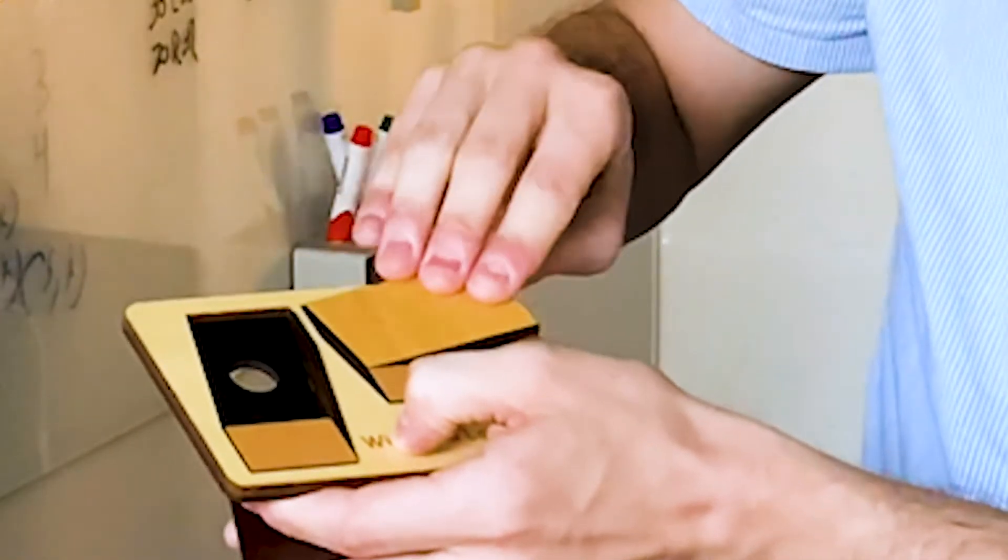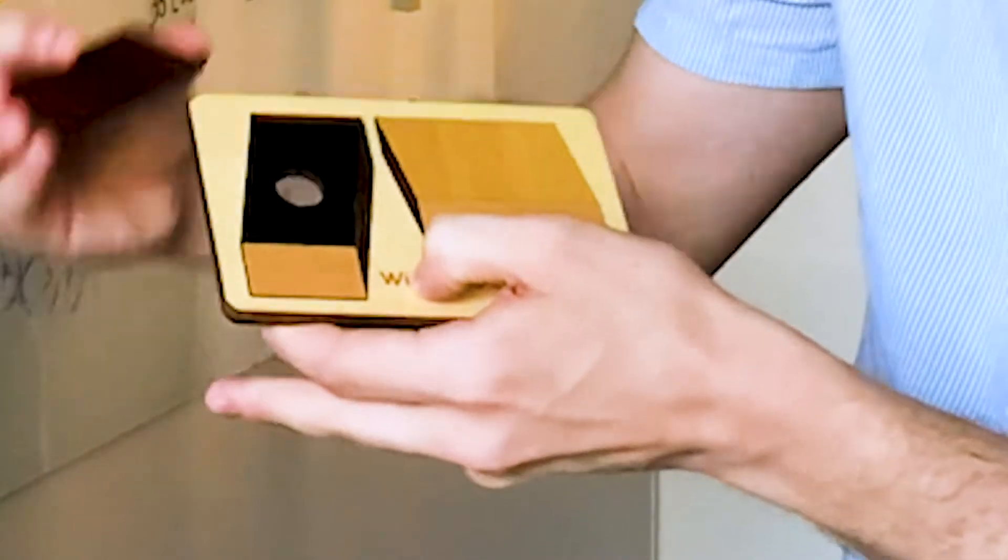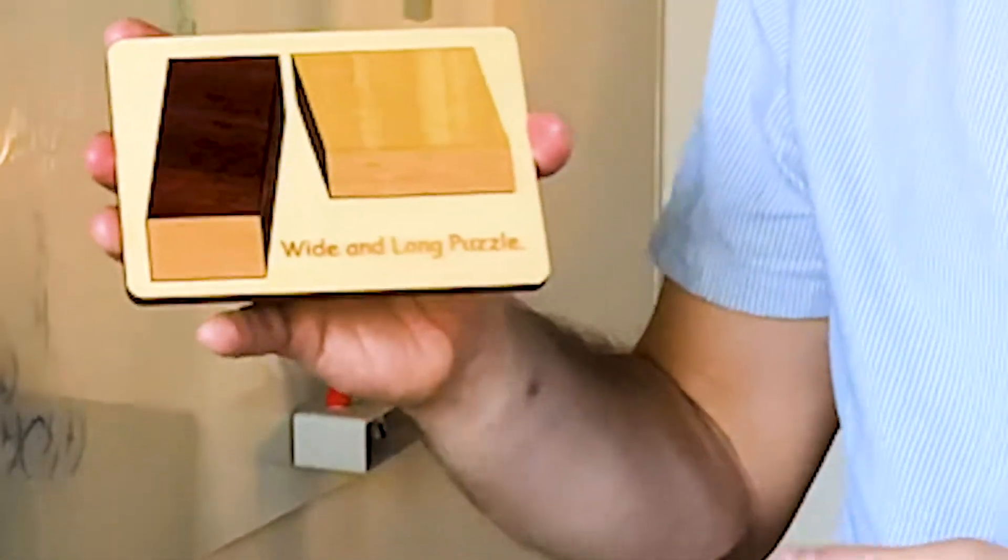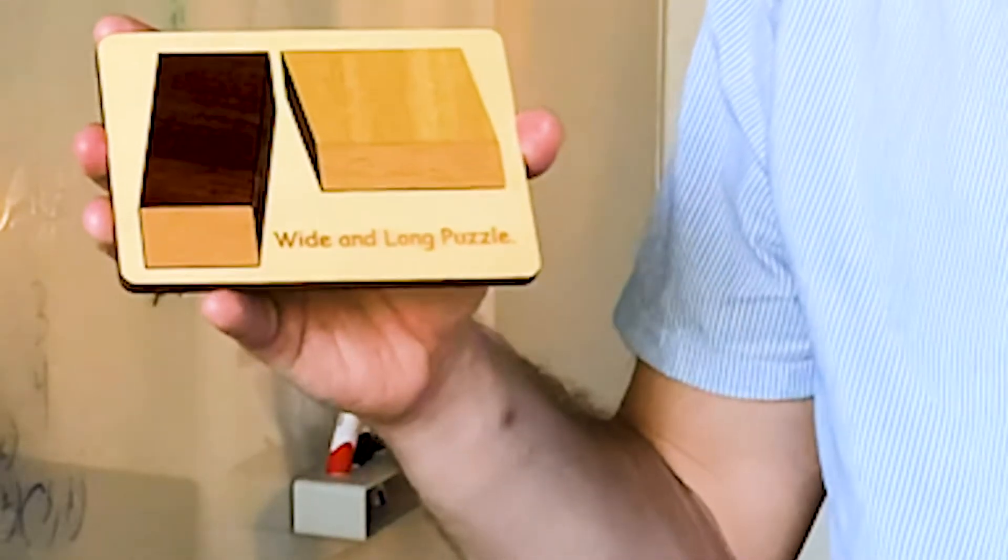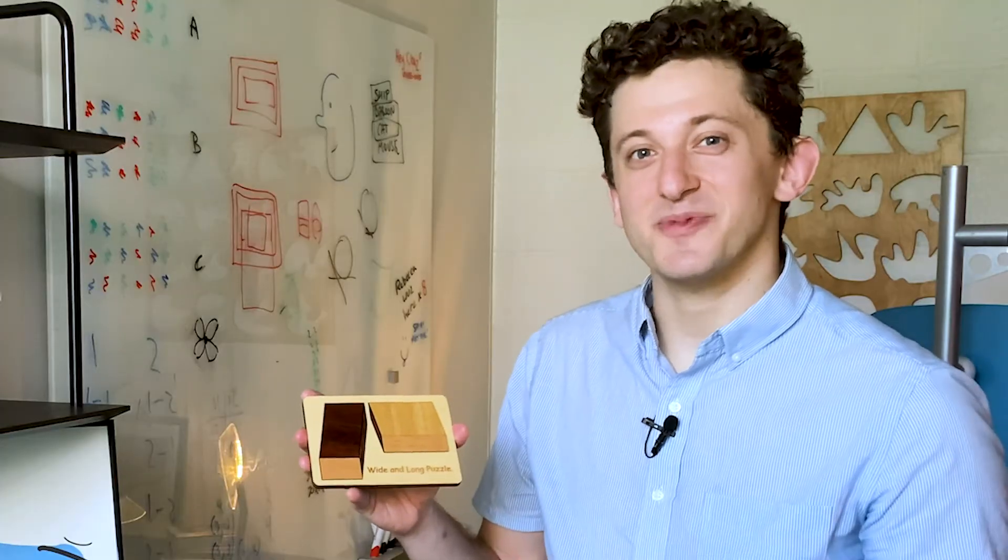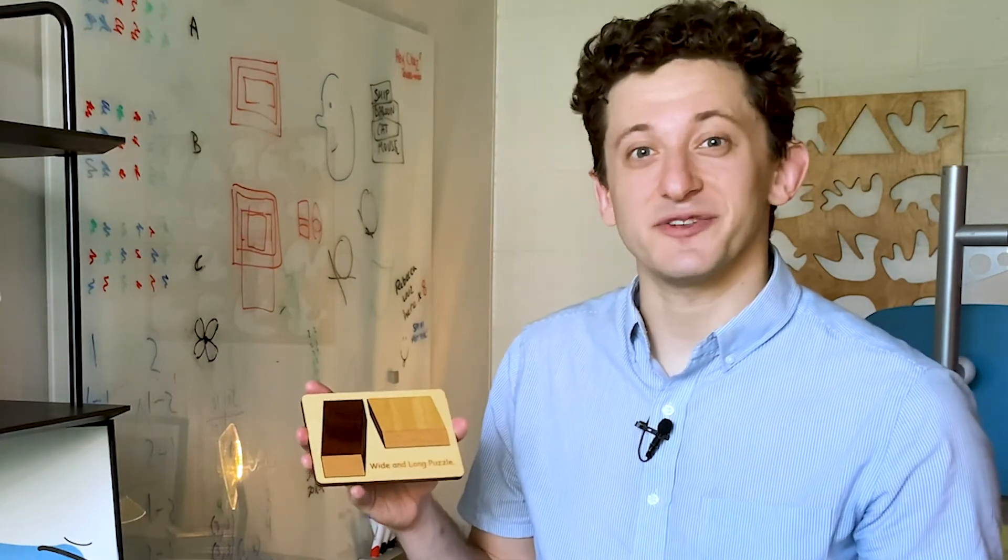And now I'm just going to put them in the place that the other one used to be. Now you can see that the dark piece fits where the light piece used to be, and the light piece fits where the dark piece used to be. So they must really be the same shape, even though your mind makes you experience them as being different shapes.